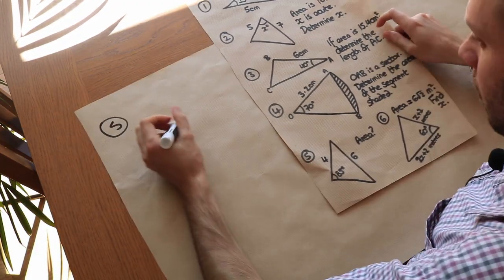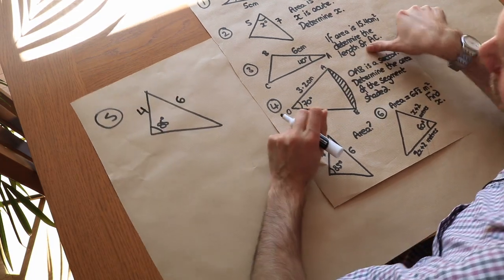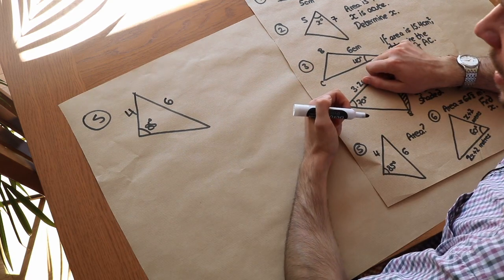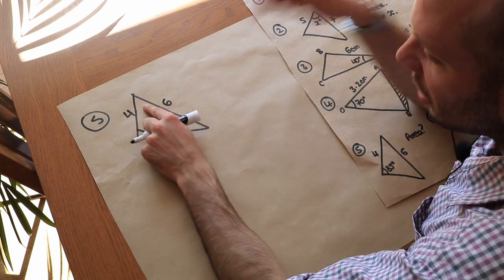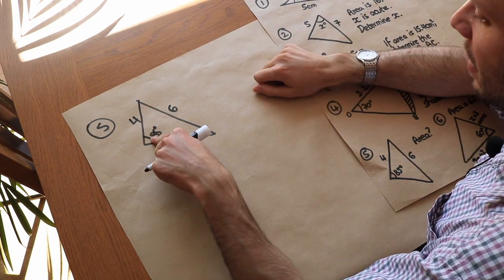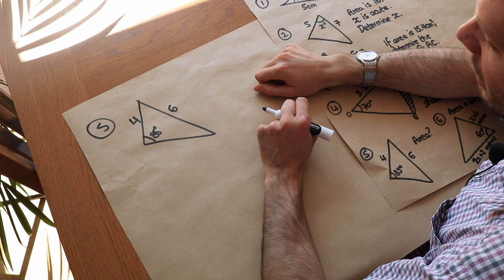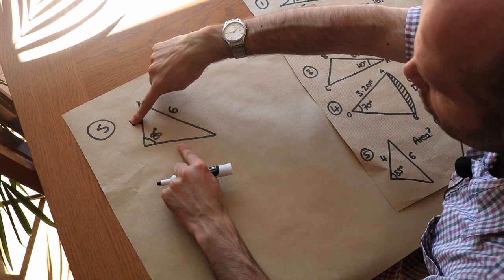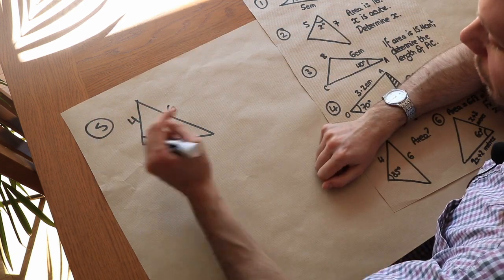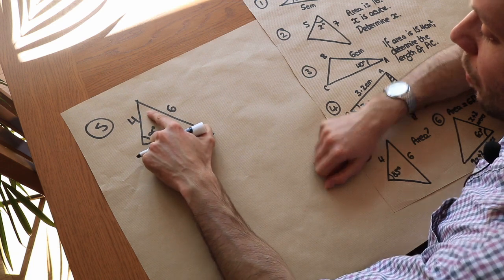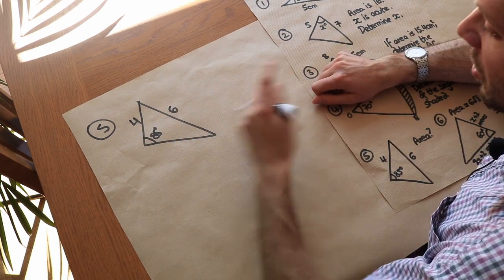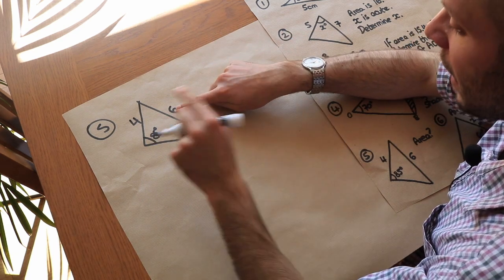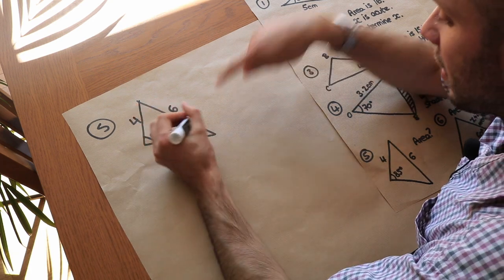For question five, we can't directly use the formula half ab sin θ because although we have two sides, we don't have the angle between them. We have two options: find the missing side or find the angle between the two known sides. We'll find that angle — call it X.